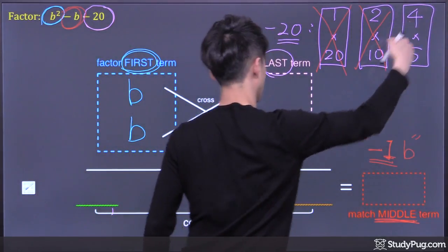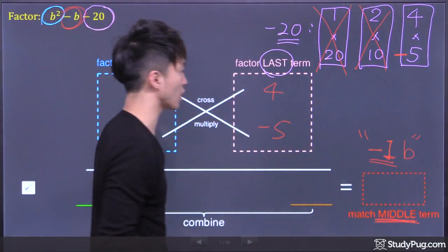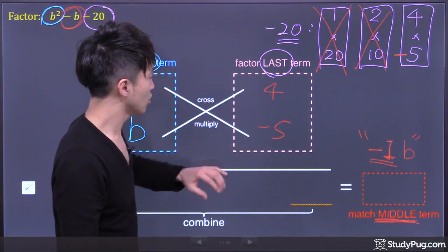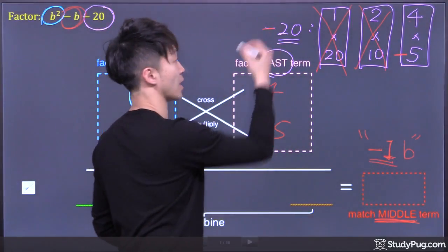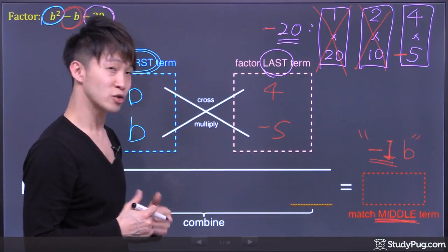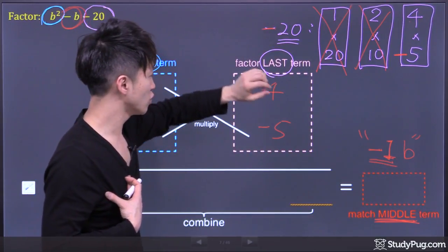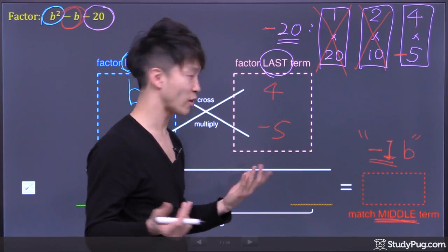So the set of factoring we put here should be 4 and negative 5. Let's double check. What's 4 times negative 5? Negative 20. See? Negative 20. So that's good. So it turns out we have to factor negative 20 into 4 times negative 5. Now let's check our answer.